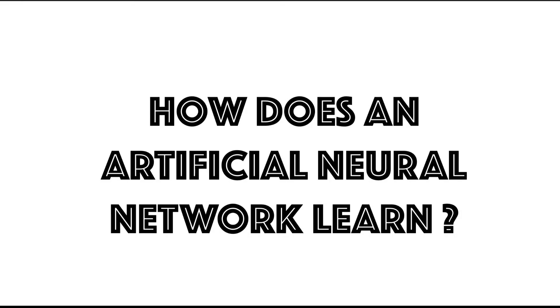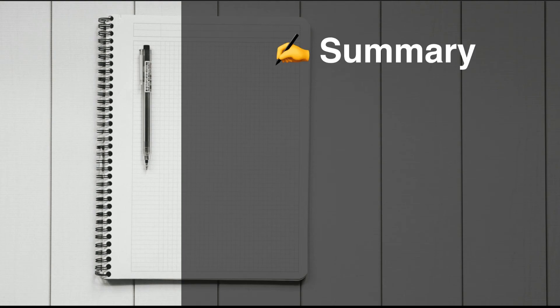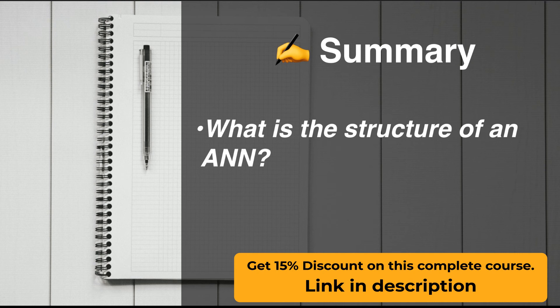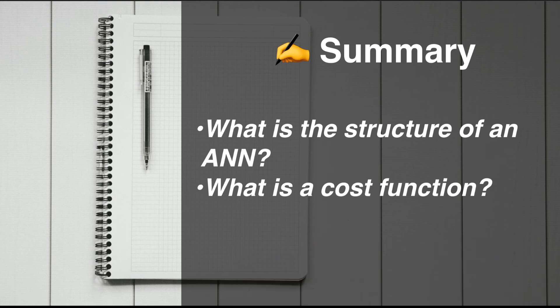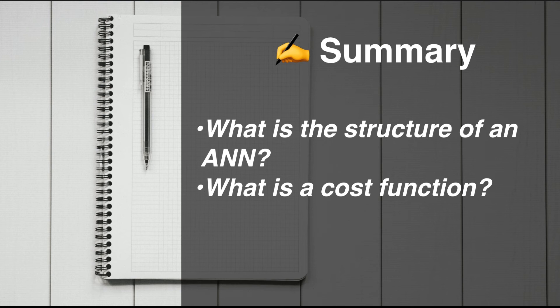Welcome back guys. In this section, we're going to look at how an artificial neural network learns. To do that, I'm going to introduce three very interesting topics: the first one is the structure of an ANN, the second one is the cost function that is at the core of the learning, and the third and last one is going to be the learning—how the learning is taking place and where it's taking place in the network.